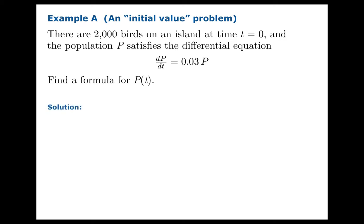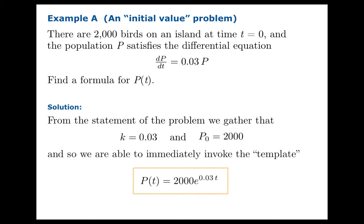Well, the statement of the problem allows us to realize that the constant k is 0.03, and we're flat out told that the initial population is 2,000. And so we can just use the template for the solution, and that's our solution. End of story.